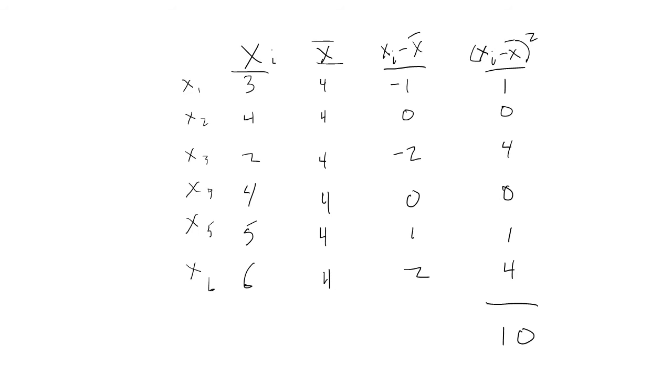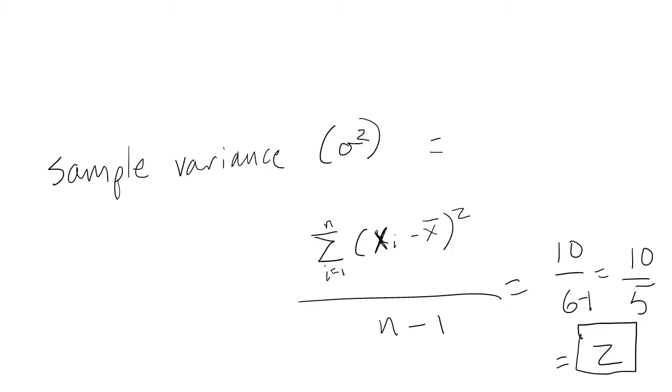Using our example, if we total all of our squared deviations, we get ten. Then if we divide by our sample size minus one, we get ten over five, or two. So our sample variance in this sample is two.